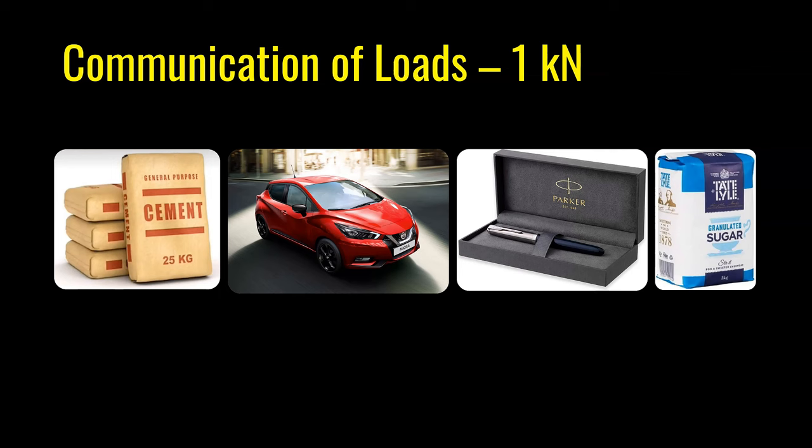One kilogram is equal to 9.81 newtons — roughly 10 newtons. This means 100 kg equals 1,000 newtons, or one kilonewton. So four bags of cement equal one kilonewton. If you forget, roughly one kilonewton is the weight of one adult person, about 80 to 100 kg.